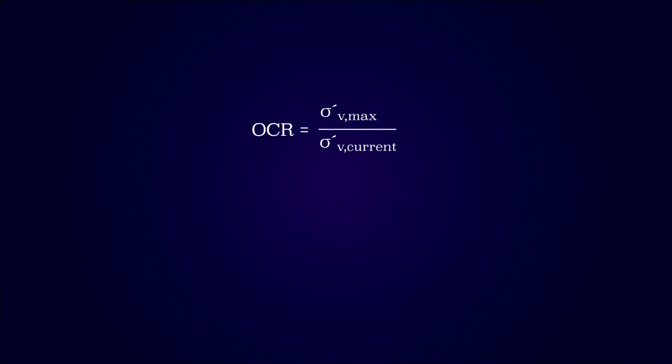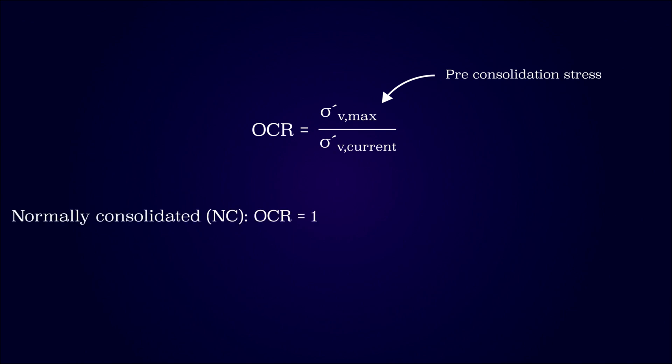The maximum effective stress experienced by the soil is also referred to as the pre-consolidation stress. If a soil has not experienced a larger effective stress than now, the soil is referred to as being normally consolidated. If the soil has experienced a larger effective stress than now, it is referred to as being overconsolidated.